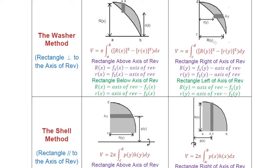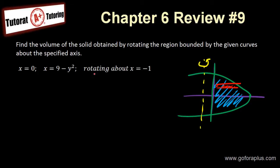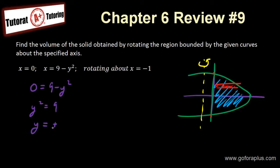The washer method will be in terms of y. Let's set up the equation. I need to find the two intersection points, so I set x equal to 0 and solve for y. Setting 0 equals 9 minus y squared gives y squared equals 9, so y equals plus or minus 3. So I have minus 3 and plus 3 as my bounds.